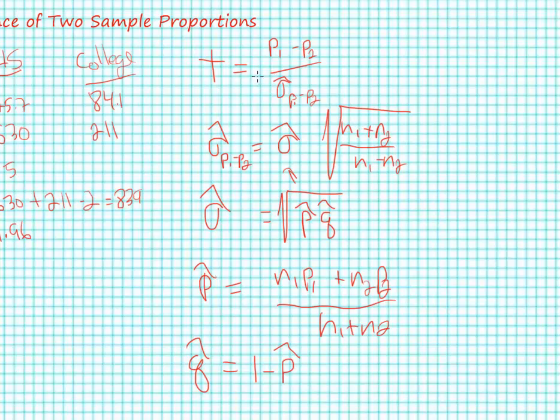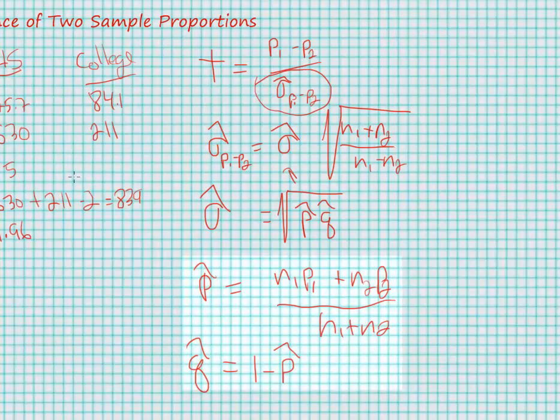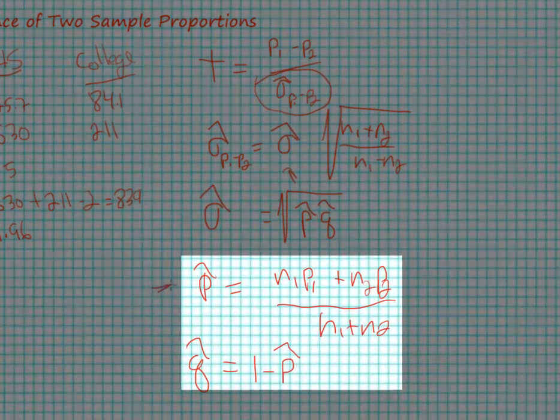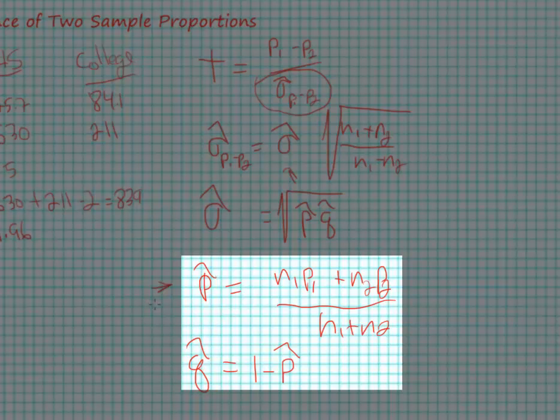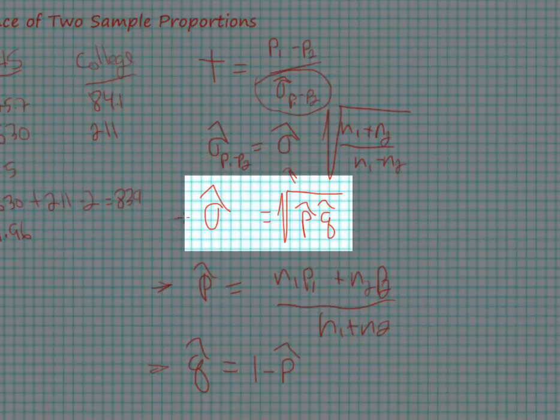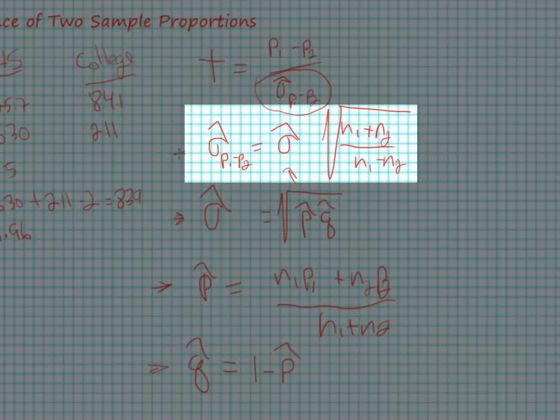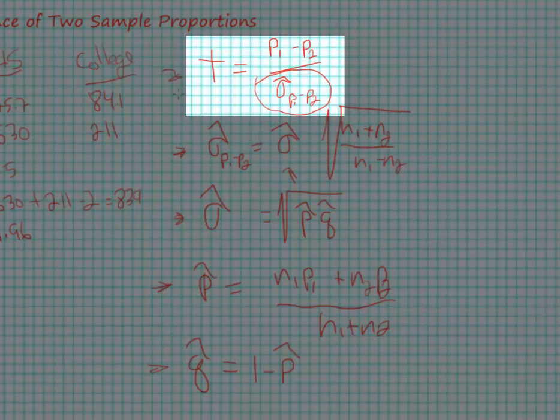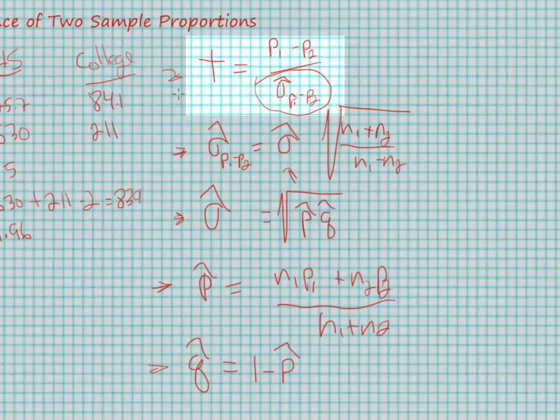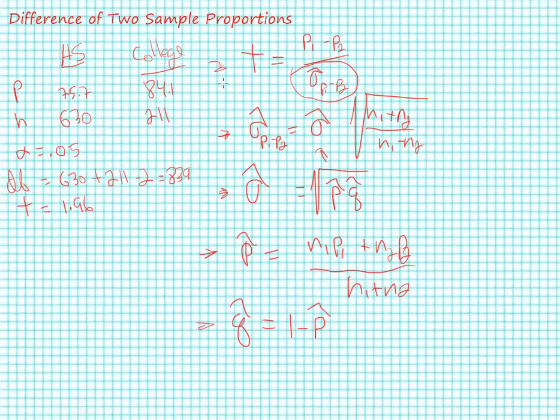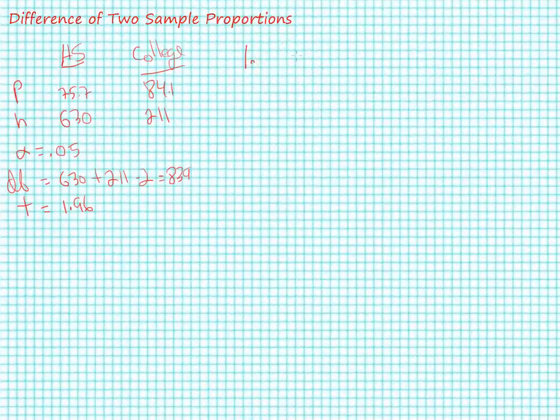So our first step to solve this problem: we're going to need to calculate this standard error, and to do that we start by calculating an estimate of a combined p hat and then our q hat, then we solve for this standard deviation, and then we plug it into our formula for the standard error, and then we solve for our t-statistic. We're going to take each one of these steps one at a time. Step number one: let's solve for p hat.